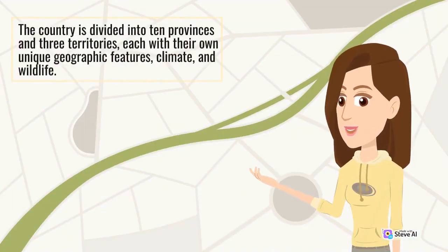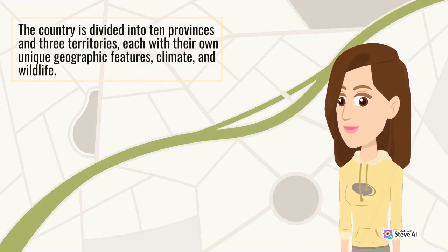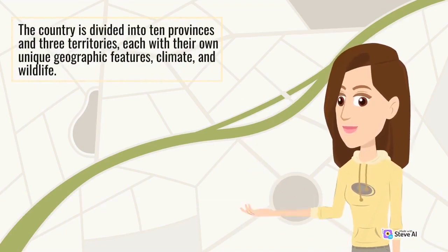The country is divided into 10 provinces and 3 territories, each with their own unique geographic features, climate, and wildlife.